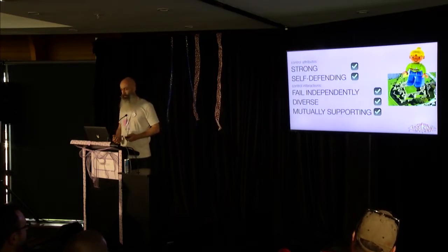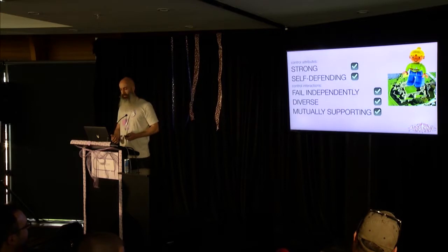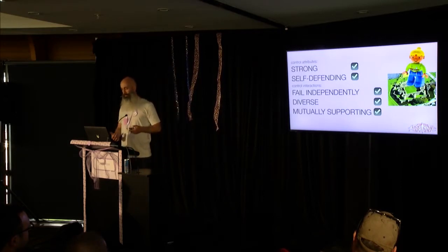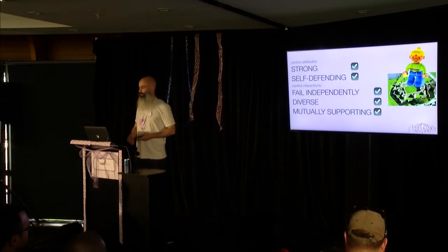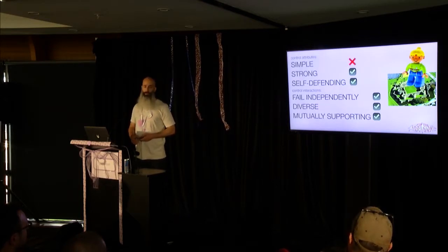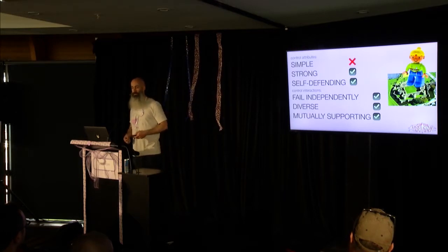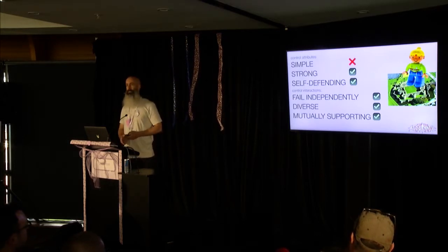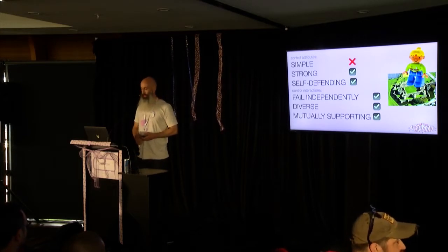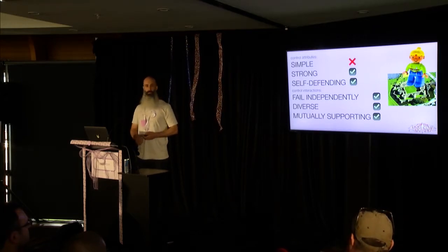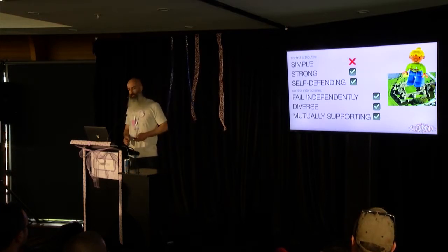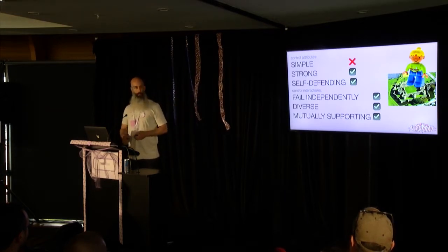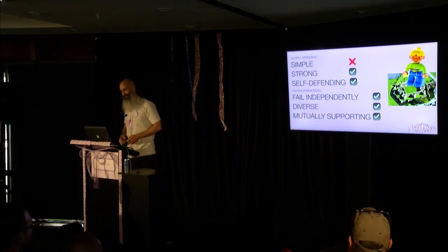This looks like a pretty sweet structure: it's strong, it's self-defending, the controls fail independently, they're diverse, and they're mutually supporting. But obviously a lot of work has gone into this, and it gets to the stage where it can no longer be described as simple. Beaumaris Castle is a great example: it was built by Edward I when he was subjugating Wales, it cost a lot of money, it was never finished because they took on too much — and before it was finished they had a new shiny project to work on in Scotland.